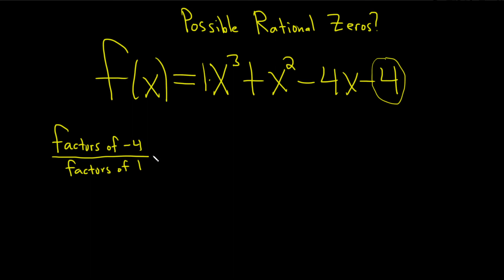Factors of 4 are 1, 2, and 4, but you also have to include negatives as well, so always do a plus or minus. So plus or minus 1, plus or minus 2, plus or minus 4. Over the factors of 1, which are just plus or minus 1.